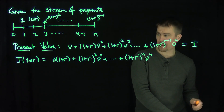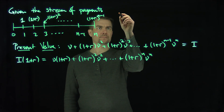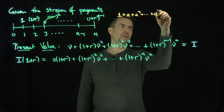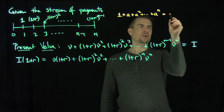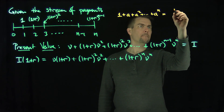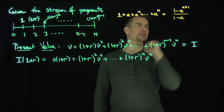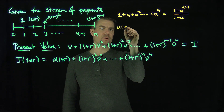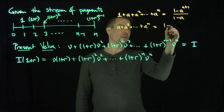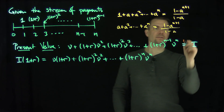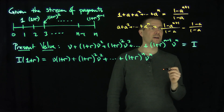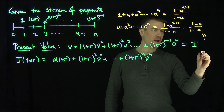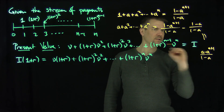Now we recall our common formula. Recall that if we have 1 plus a plus a squared, plus all the way to a to the power of n, then this is exactly 1 minus a to the n plus 1 over 1 minus a. And so if I start with a, I subtract off 1, giving me a plus a squared all the way to a to the n, which equals 1 minus a to the n plus 1 over 1 minus a, minus 1 minus a over 1 minus a. This simplifies to a minus a to the n plus 1 over 1 minus a.